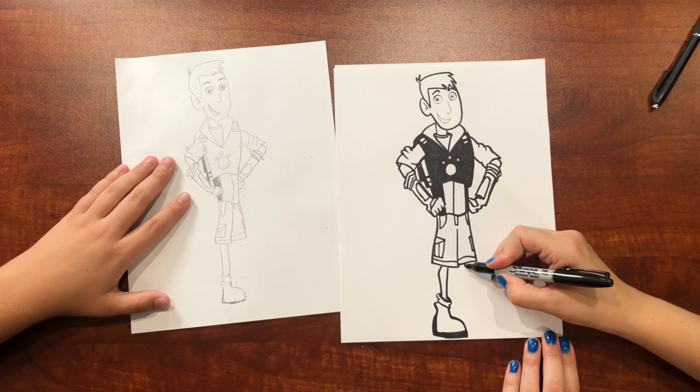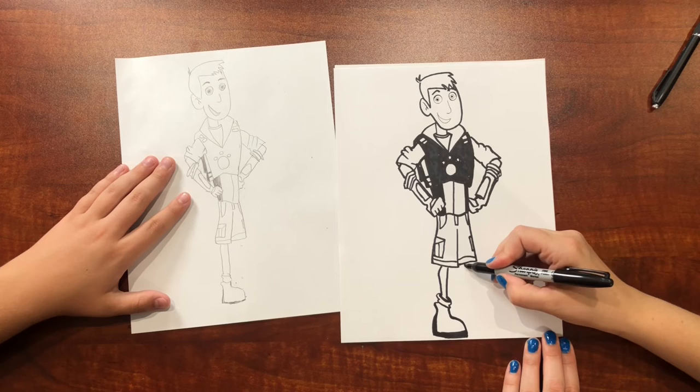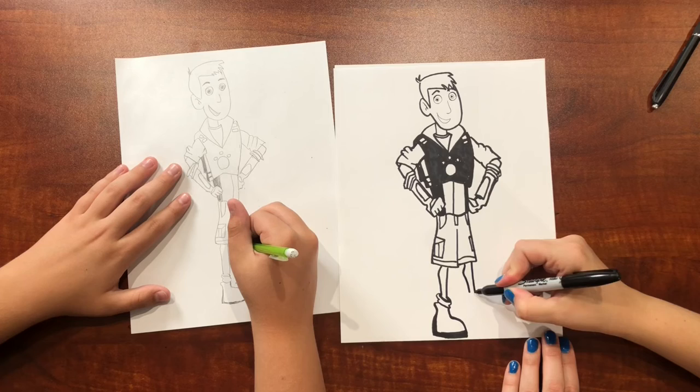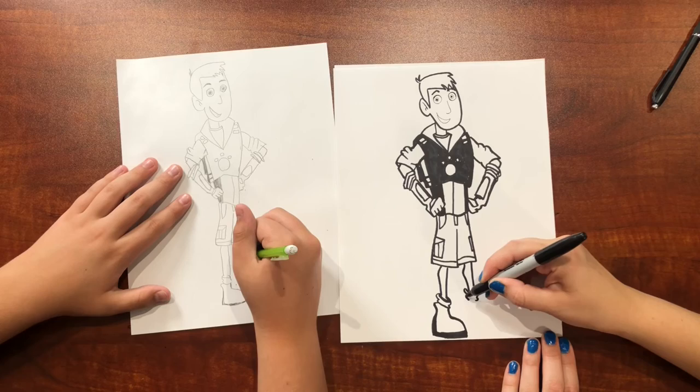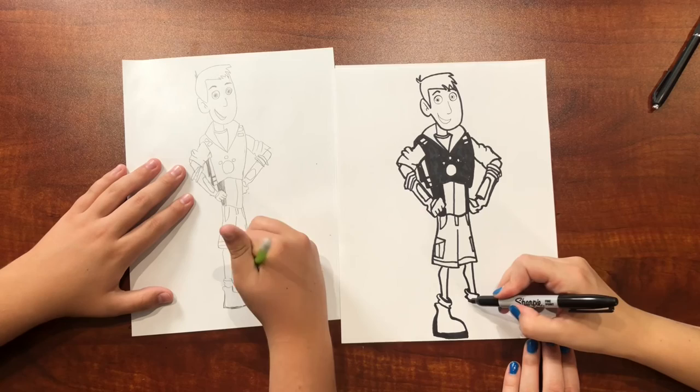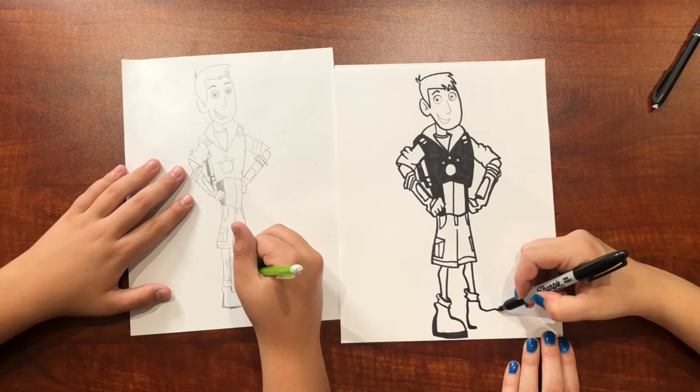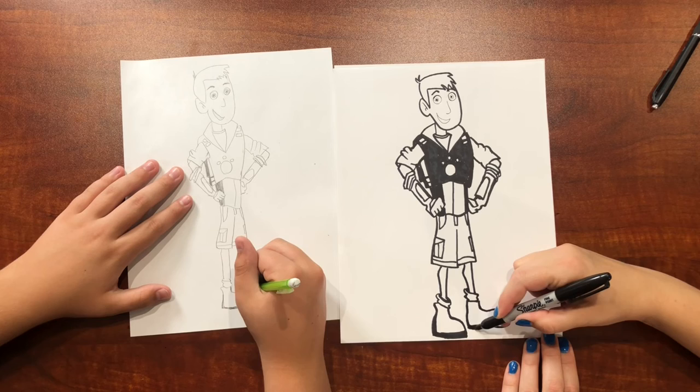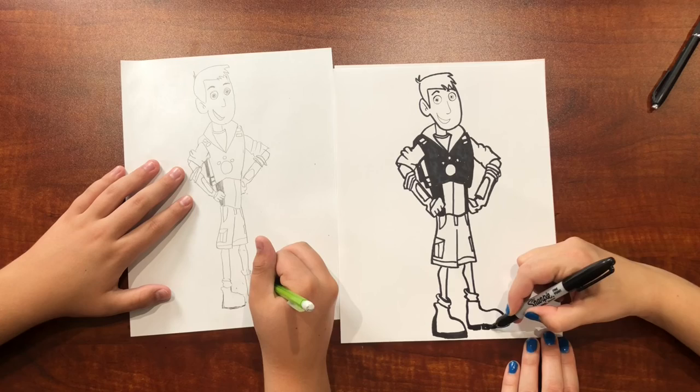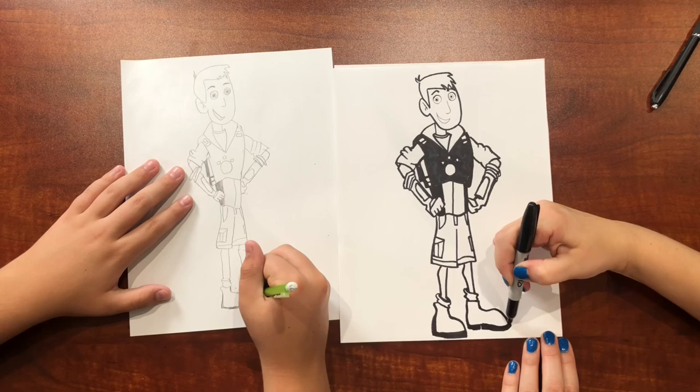And then the other leg comes down and forward, and then straight down. And then the bunchy socks again. And then you've got a straight line right there and then it comes down. And it doesn't go quite as far down as this one, and then it comes forward like that. And then he's got the sole right here.